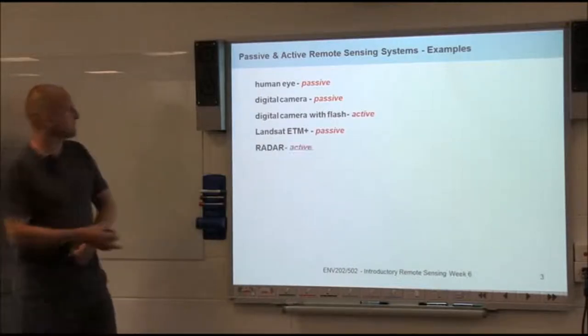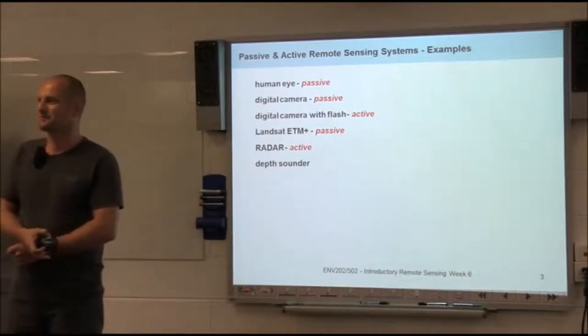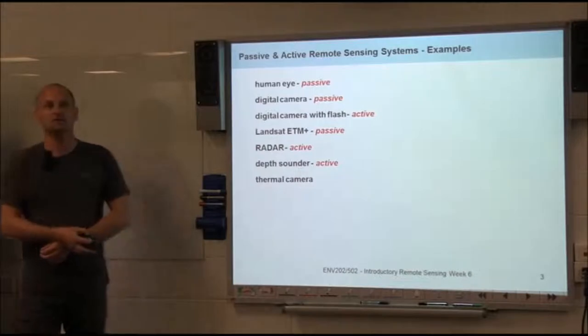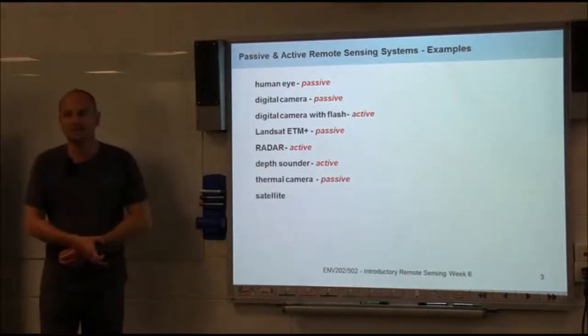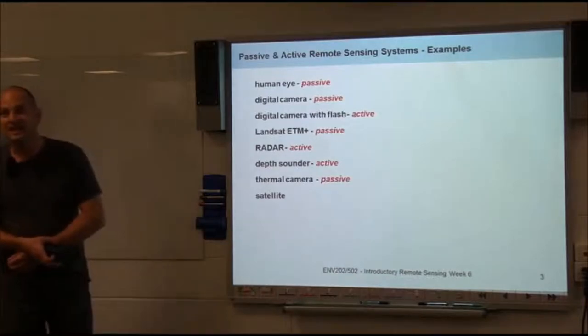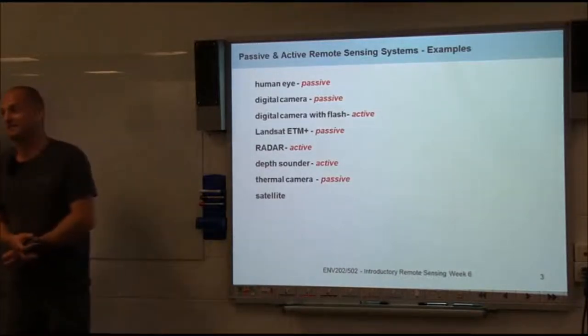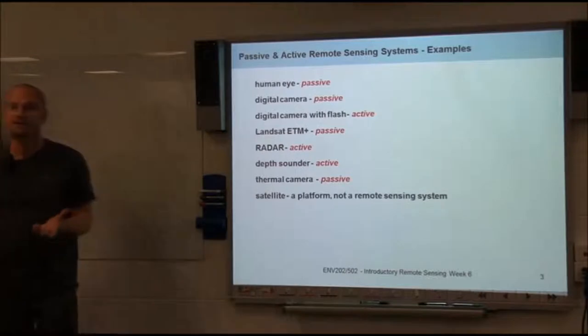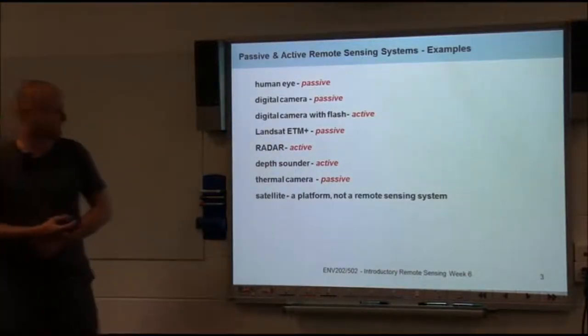Radar? Active. A depth sounder—doesn't use light but sound? That's an active system. A thermal camera? Passive. A satellite? The satellite isn't necessarily a sensor. The satellite is really a platform that can carry a remote sensing system. So that's a bit of a tricky one.